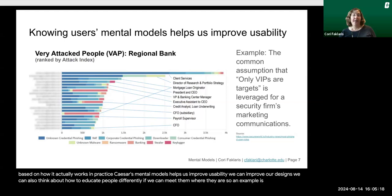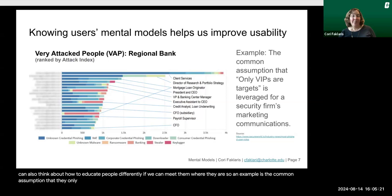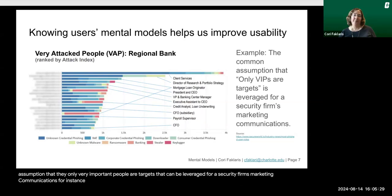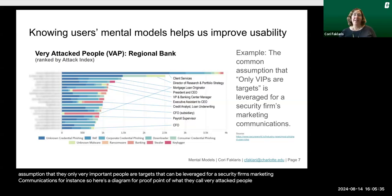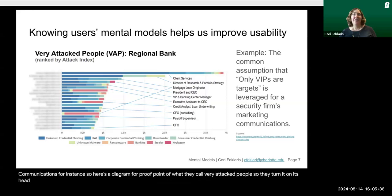An example is the common assumption that only very important people are targets. That can be leveraged for a security firm's marketing communications. Here's a diagram from Proofpoint of what they call 'very attacked people.' They turn the assumption on its head and think: it's not just about who's important, it's about who's actually being attacked by attackers.